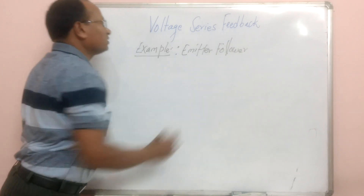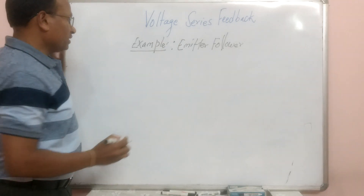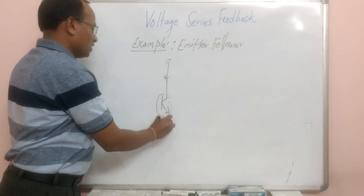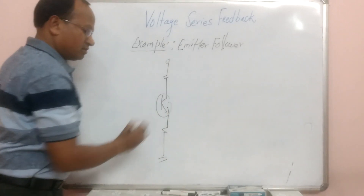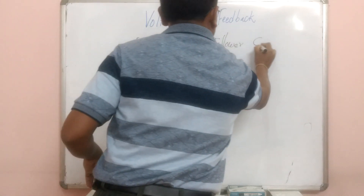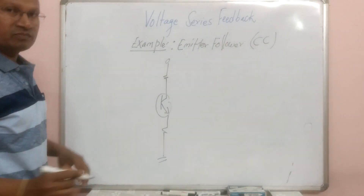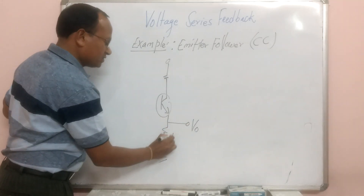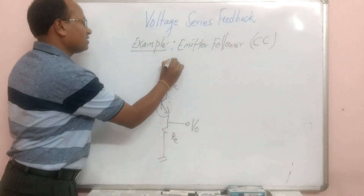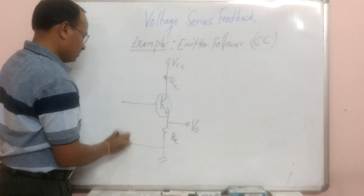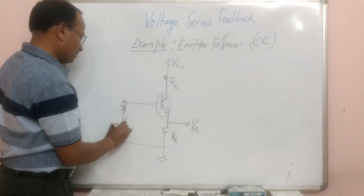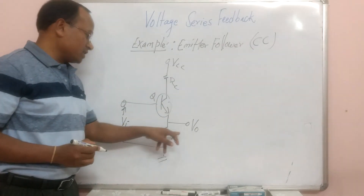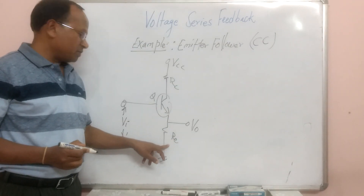Let us try to draw a circuit diagram of emitter follower. Emitter follower is nothing but common collector — we know that common collector is emitter follower. When we take our output across emitter resistance RE, this is RC, this is the supply, and here our input signal is connected. This is an NPN transistor. The output is being taken across RE.